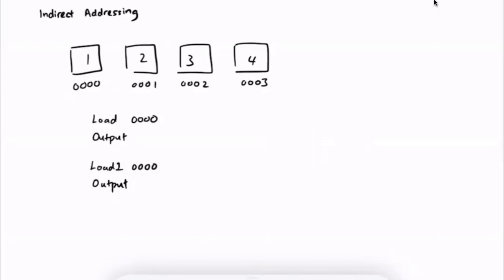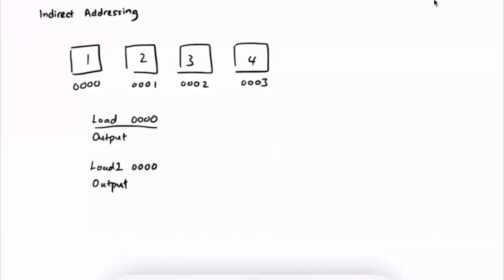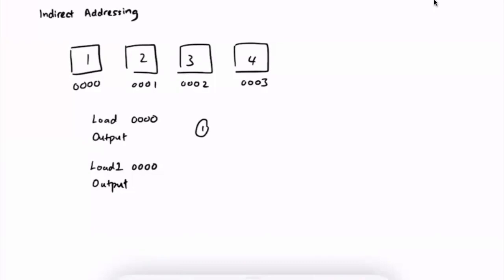Imagine I have 4 memory blocks. Each memory block has its own address with a value. So the address for this block will be 0000, and the value is 1. All these are in hex as well. If we load 0000 and output it, it will output 1, because it's loading the value of 0000 to the AC and outputting it. But what if we do something like loadI 0000? We know the value for memory block 0000 is 1, so it will treat this value as an address and load the value of that address.